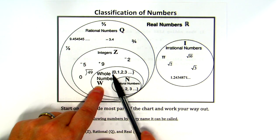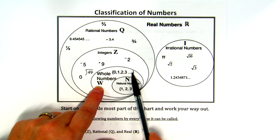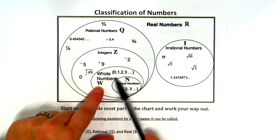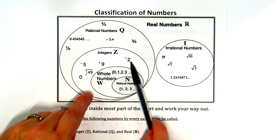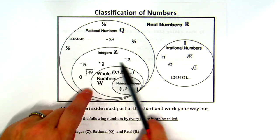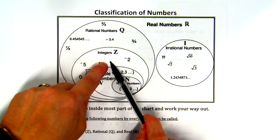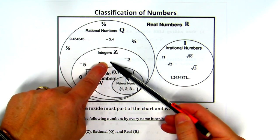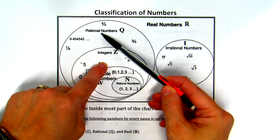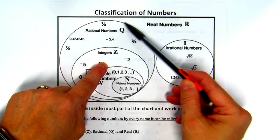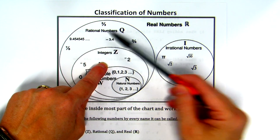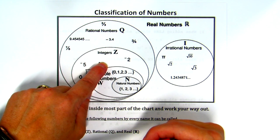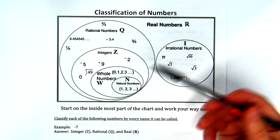The next circle out is whole numbers — the only difference is we've added zero, but no negative numbers, so negative three doesn't fall there. The next circle out is integers — would a negative number fall here? Yes. So negative three can be called an integer, a rational number, and a real number, because you work your way out the chart. Negative three has three names: integer, rational, and real.